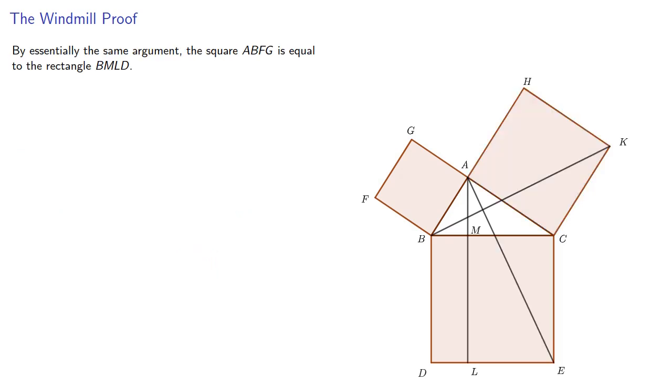By essentially the same argument, the square ABFG is equal to the rectangle BMLD, so the squares on the sides AB, AC are together equal to the square on the hypotenuse BC. And that completes the proof.